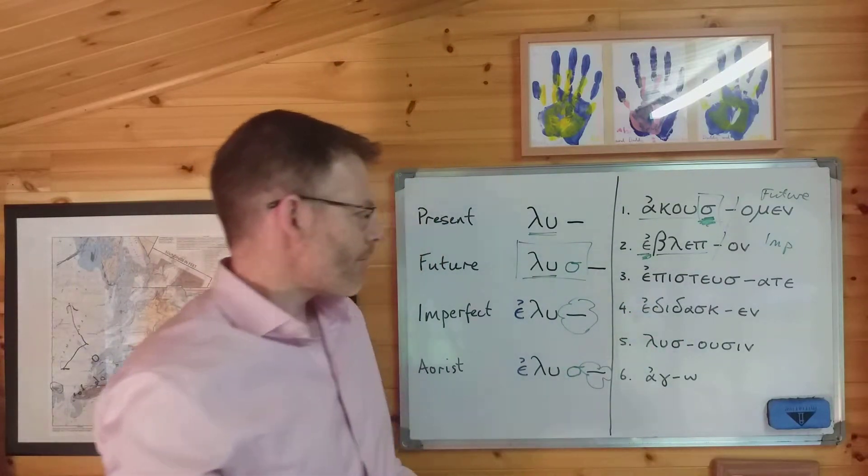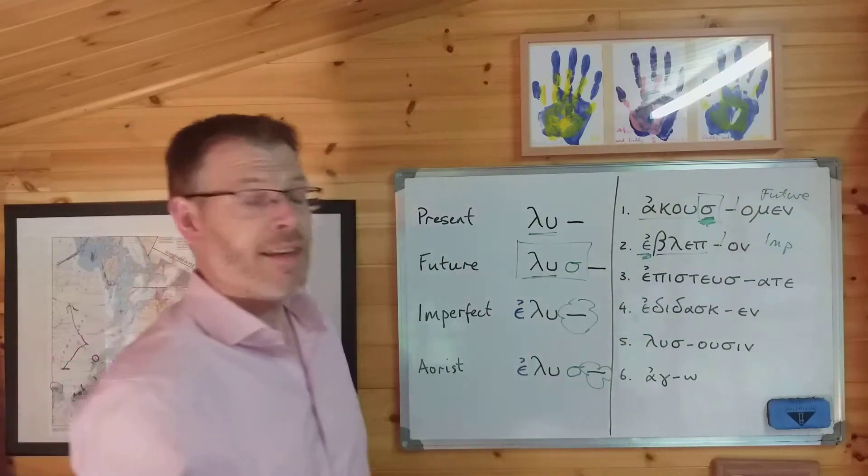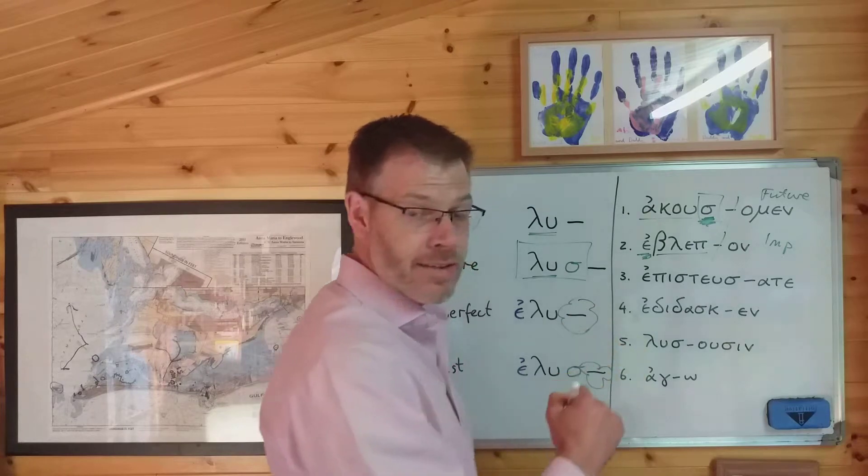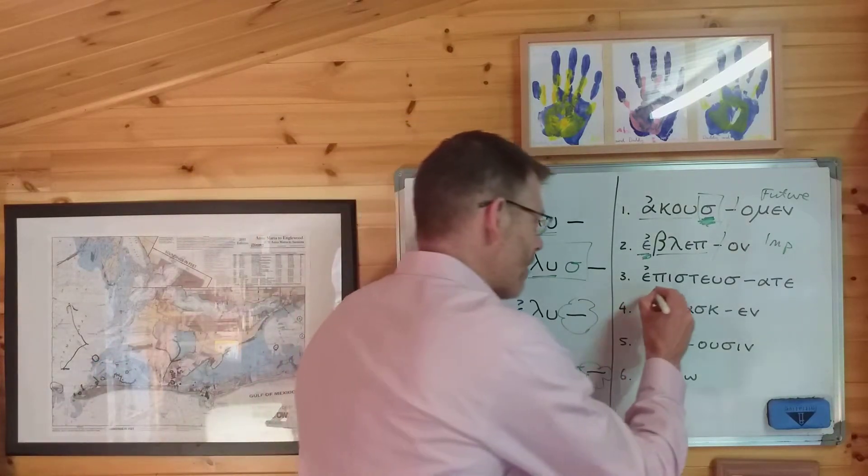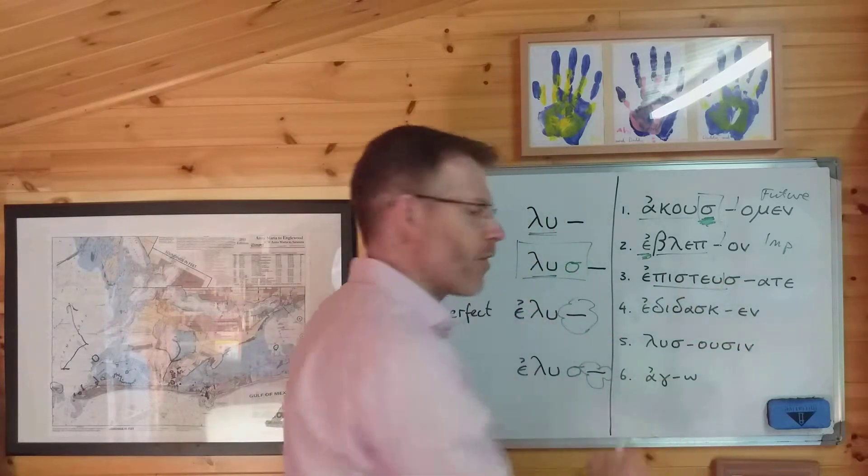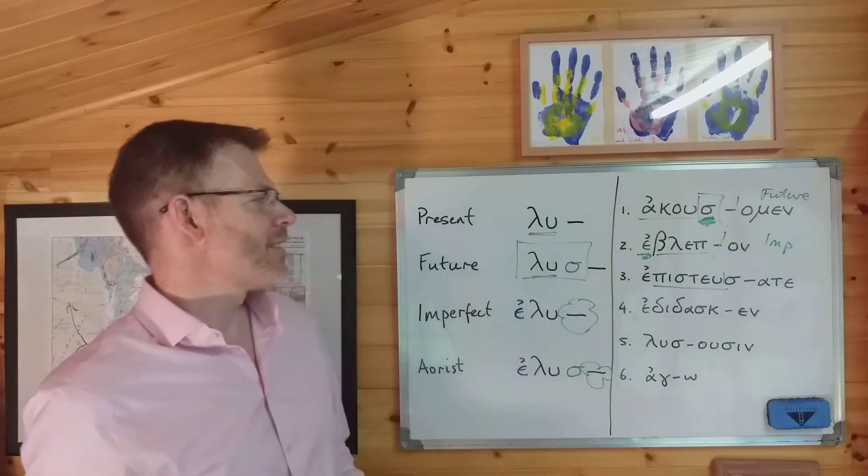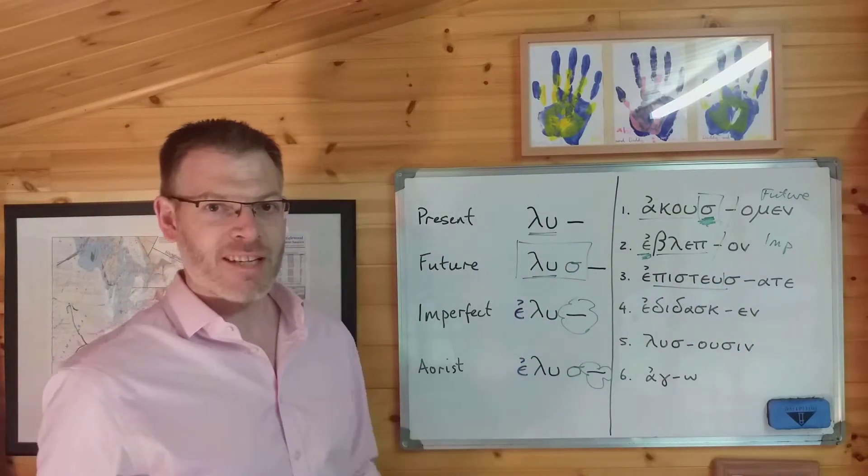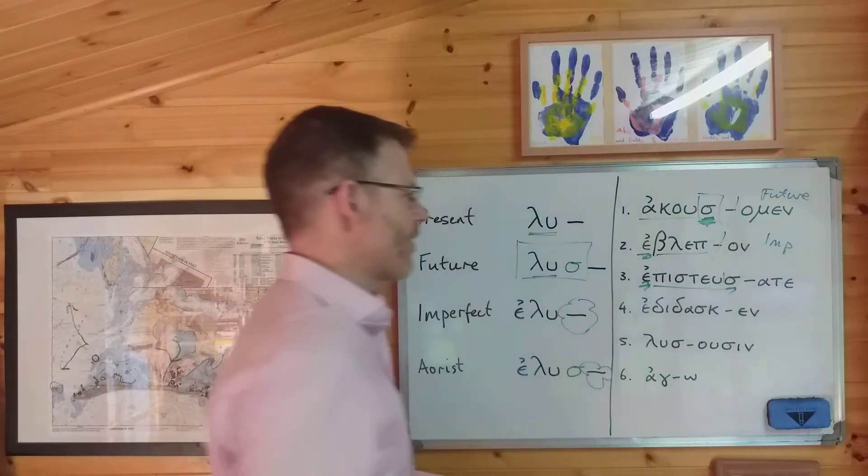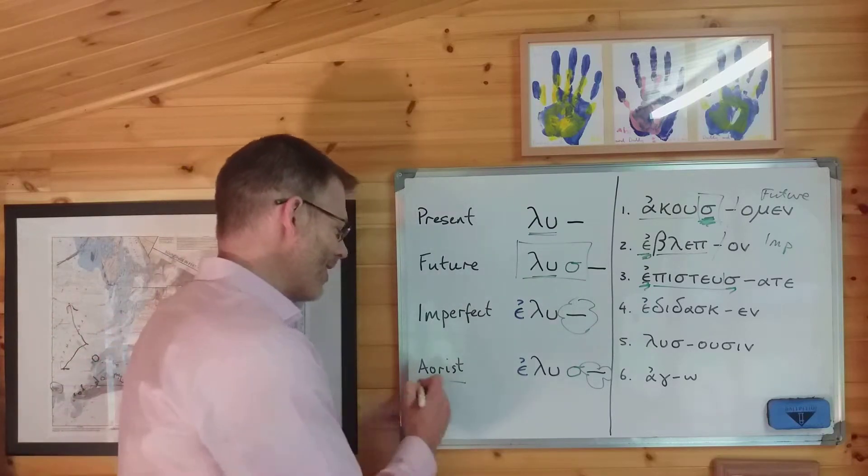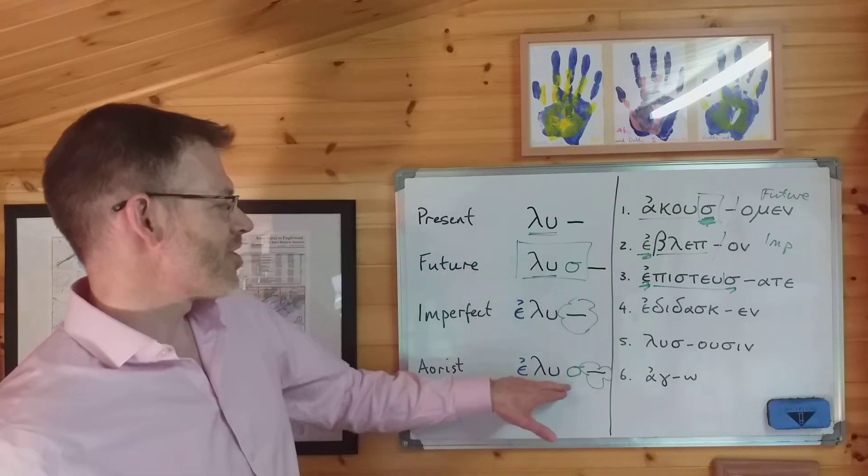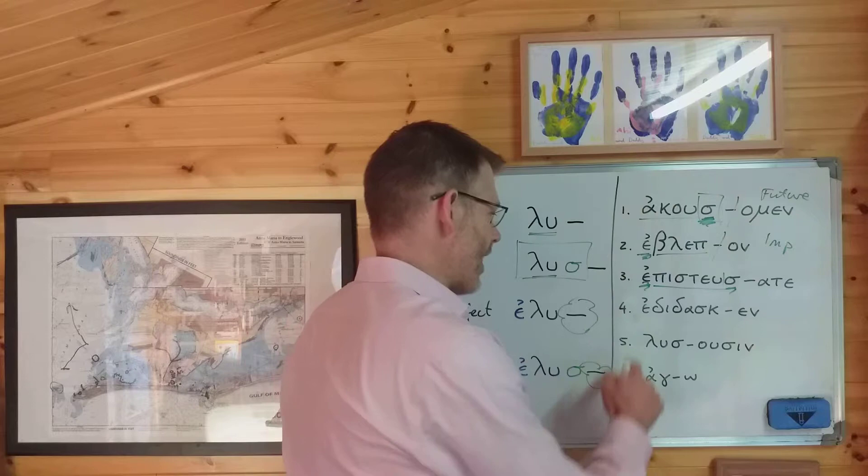Let's look at the next one. Επιστευσατε. Ignore the ending. Find the stem. What's the stem? The stem is πιστευ, from the verb πιστευω, I believe. Does it have an epsilon augment? Does it have a sigma suffix? Yes, it does. Yes, it does. So if it has both, the really weird one, the one you've never heard before, it's an aorist.